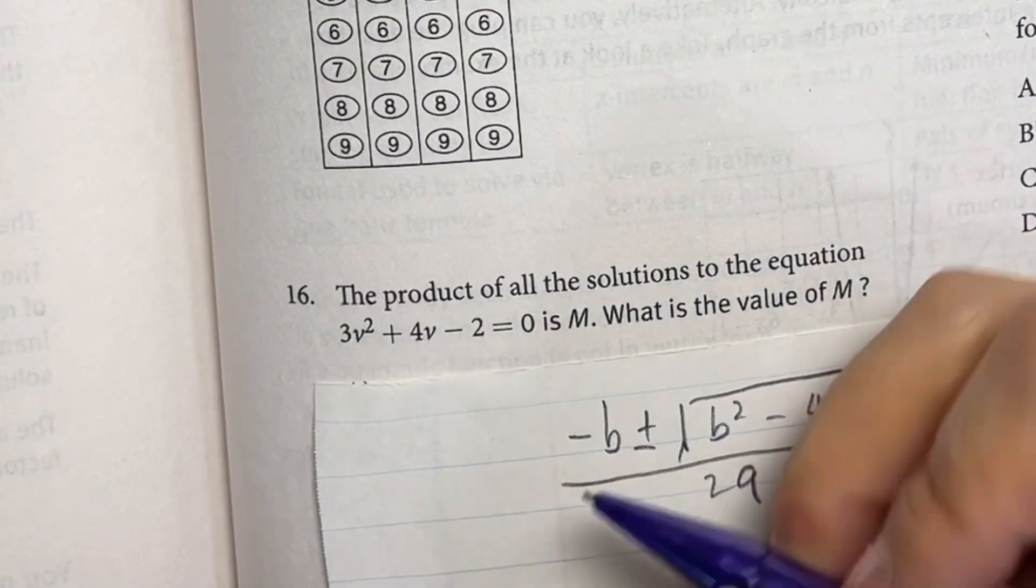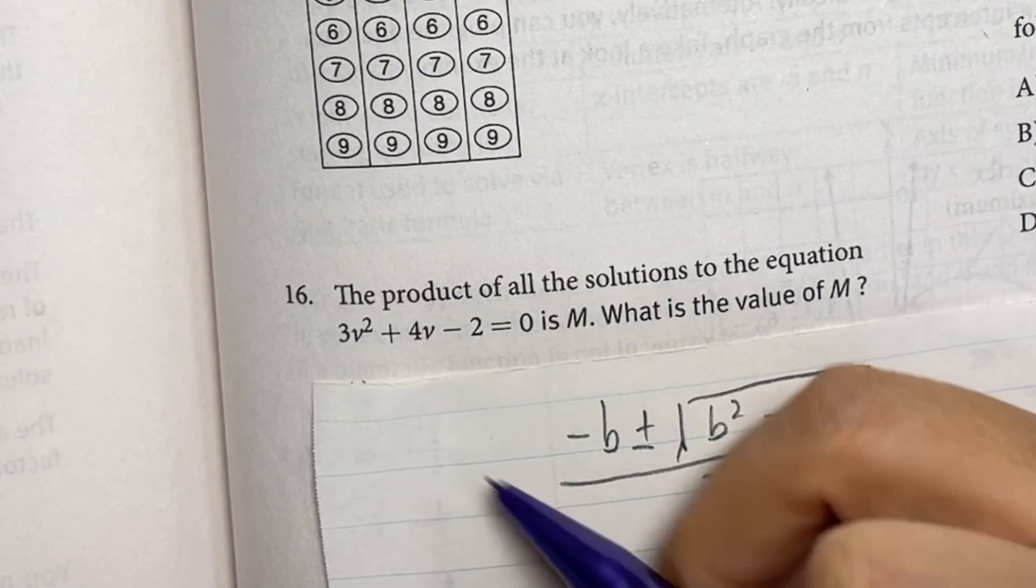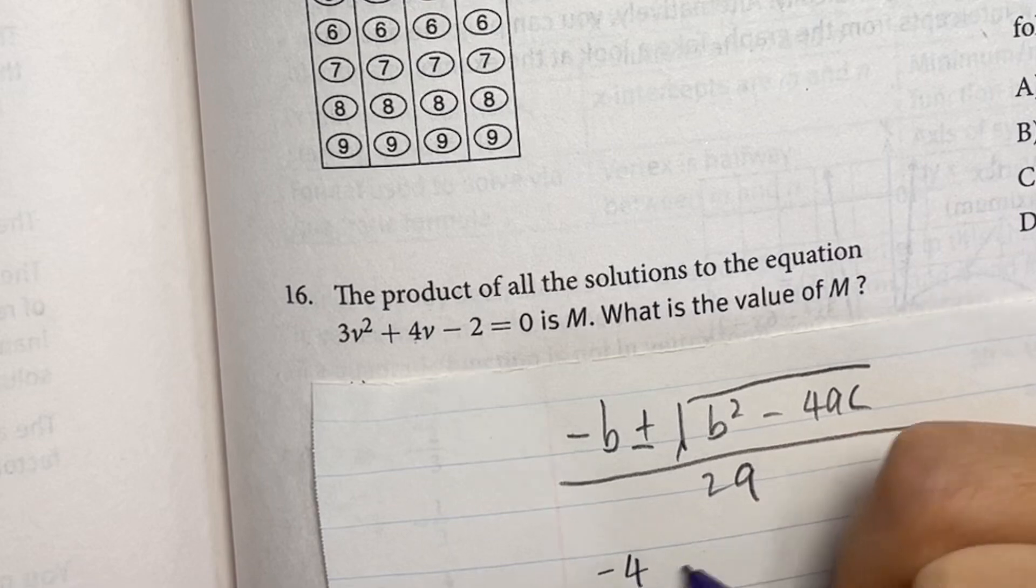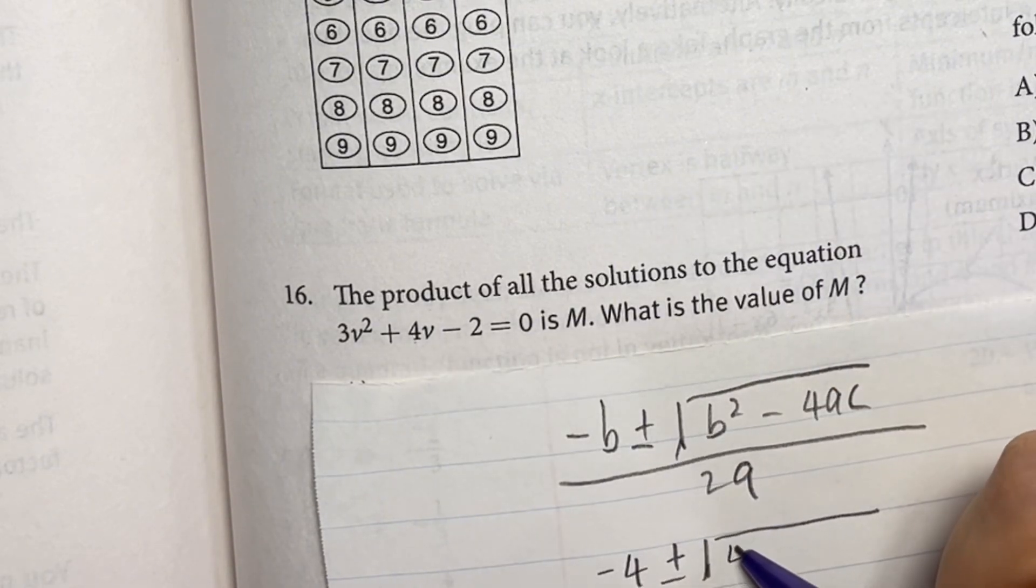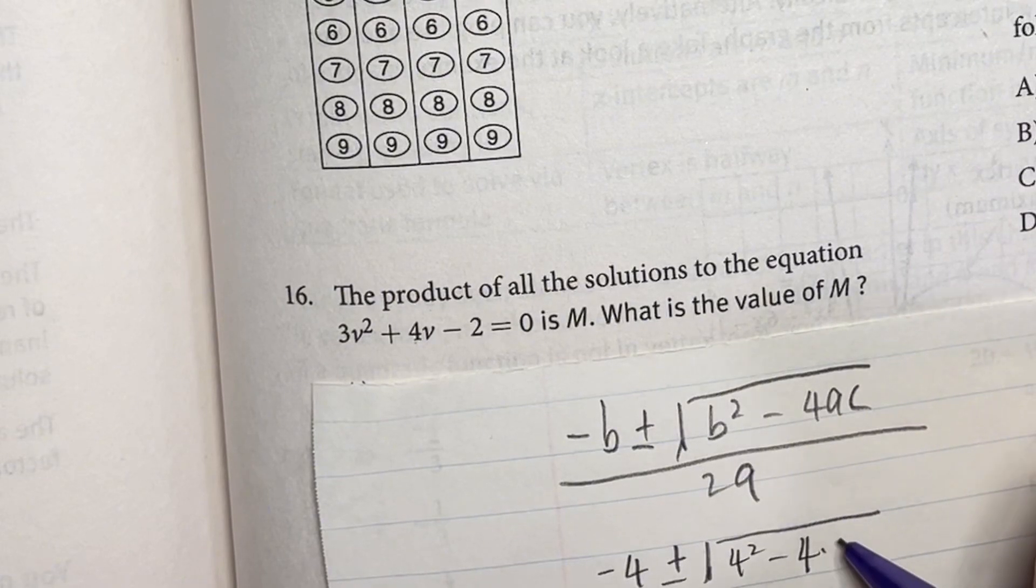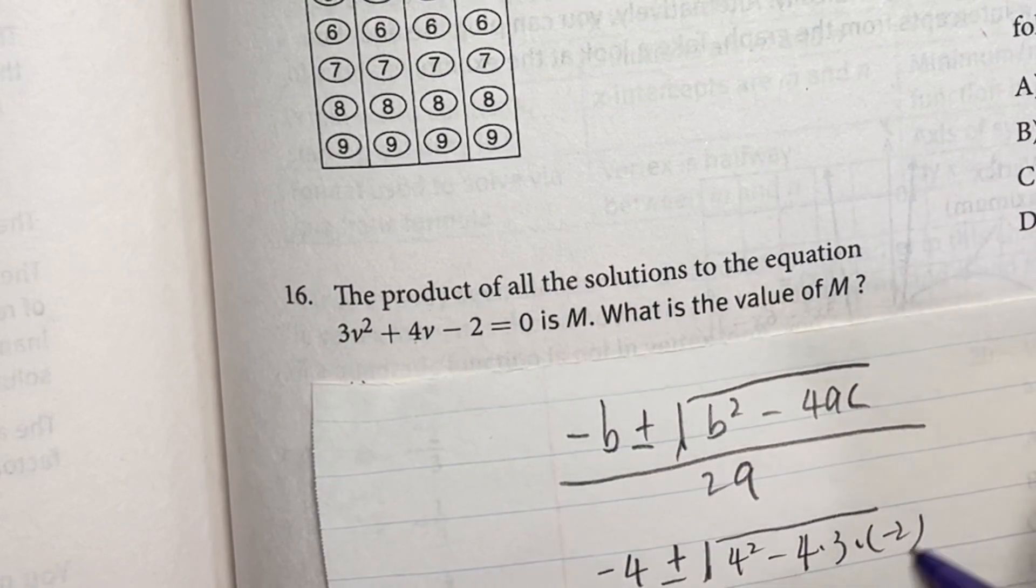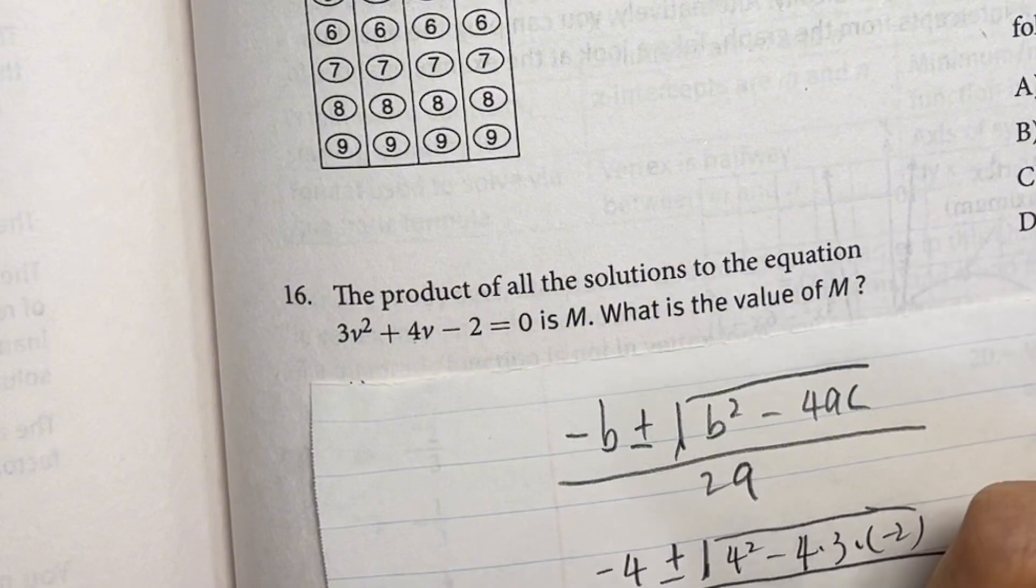So in this question, what is b? Negative b is 4. So -4 ± √(what is b²? b² is 4²) minus 4a is 3. What's c? c is -2, divided by 2a, 2 times 3.